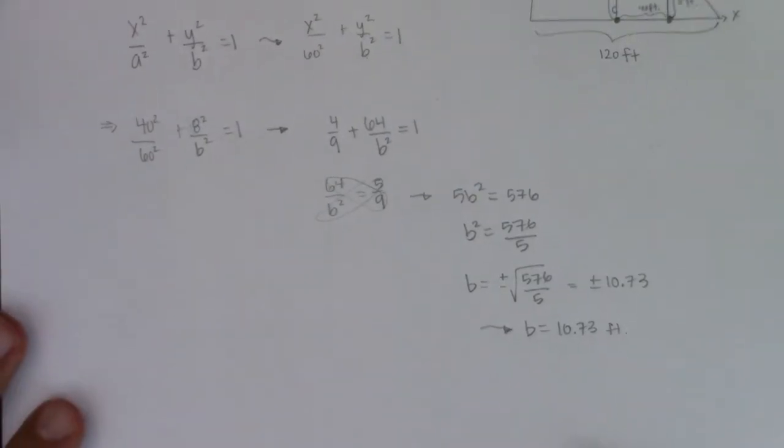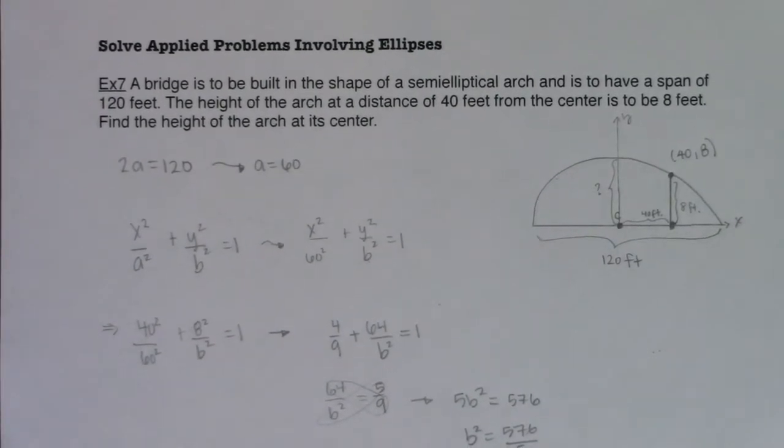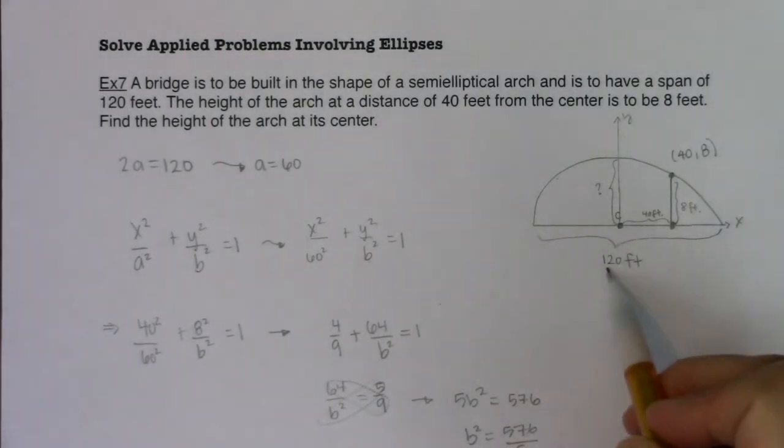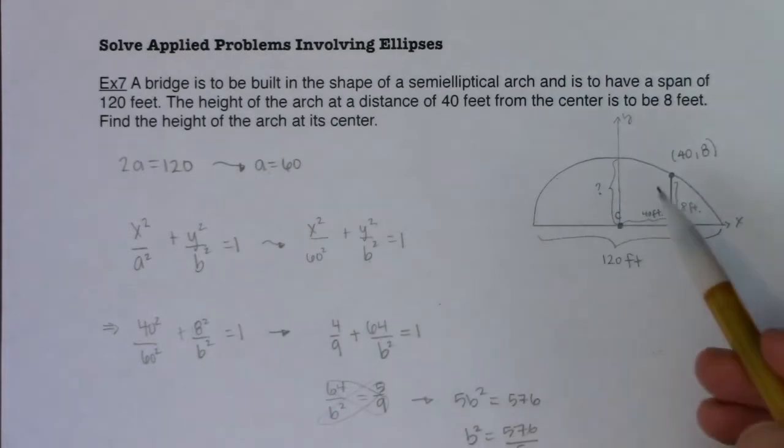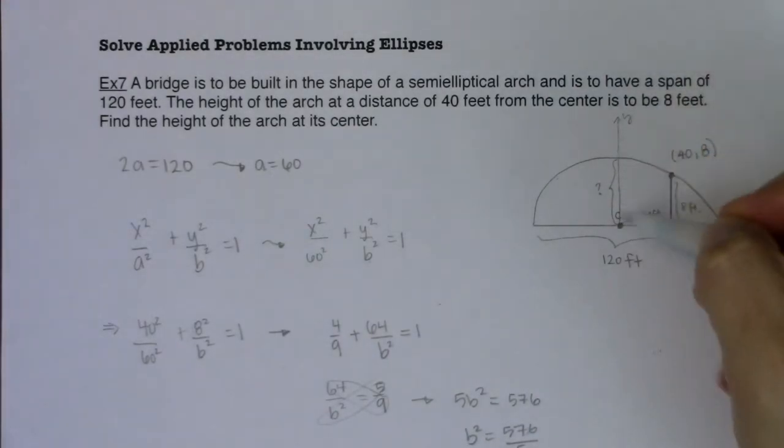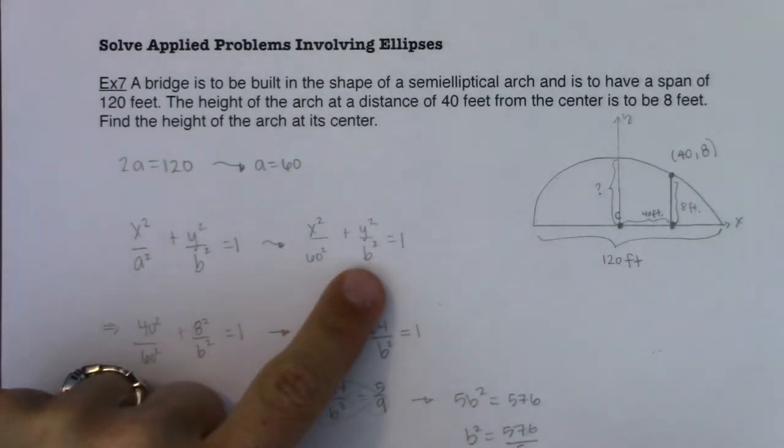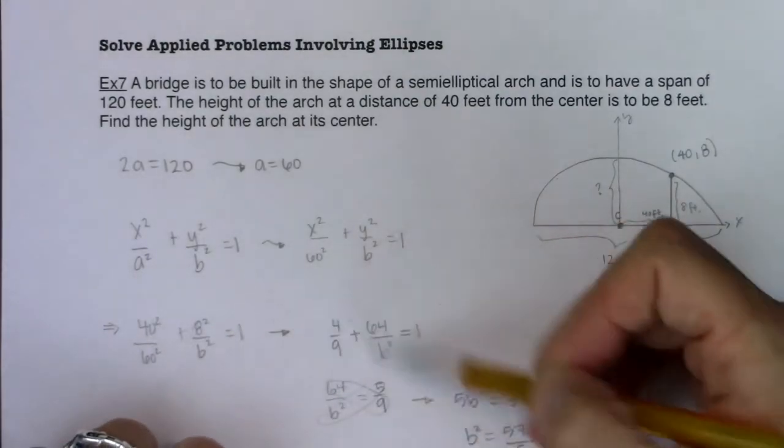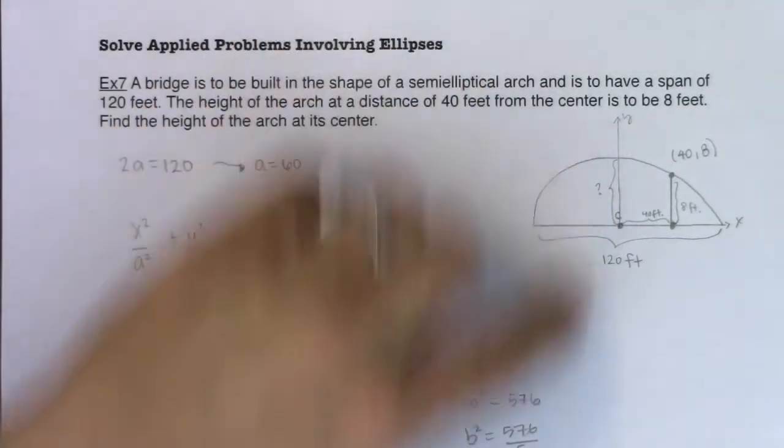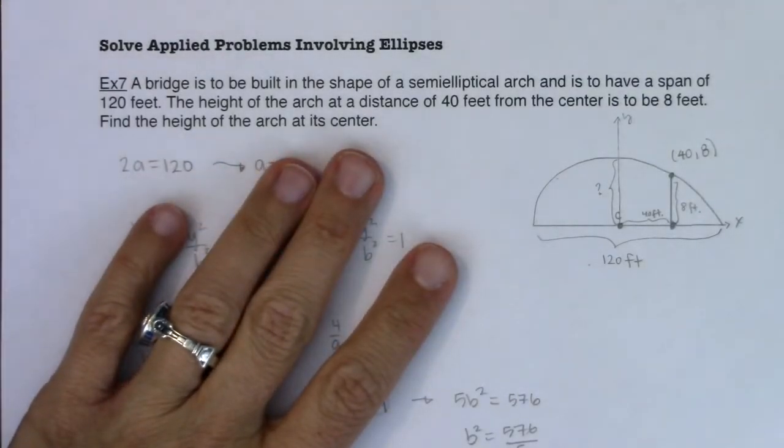Let me go ahead and scooch this down just so we can see where we started and where we've gotten to. So I knew that 2a was equal to 120, and they were asking me for b. So 2a was equal to 120, so a was 60. And I knew I had a horizontal ellipse because that's what bridges look like. Now vertically, I didn't know how high this distance was. I didn't know what b was equal to. So in plugging in to my ellipse formula, you can see I had b left over here. I wasn't sure what that was equal to. But I had an ordered pair of 40, 8, so I plugged in 40 for x, 8 for y, and I solved for b. And when I solved for b, I found out b was equal to 10.73 feet. So the height of the arch at its center is about 10.73 feet.